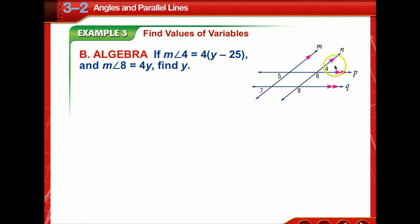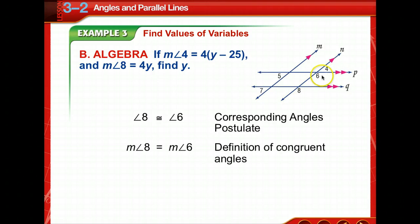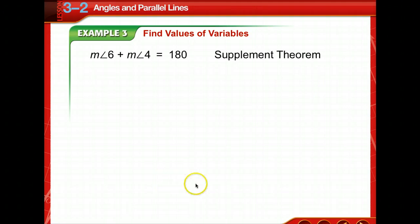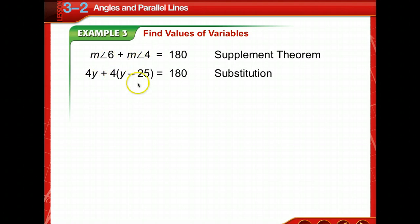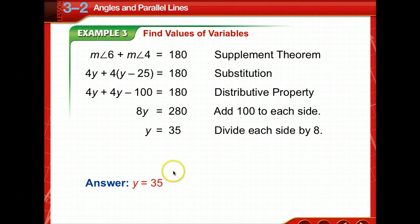For the next problem, the measure of angle 4 is 4y minus 25 and the measure of angle 8 is 4y. Find y. Angle 8 is congruent to angle 6 by the Corresponding Angles Postulate, so their measures are equal. The measure of angle 6 plus the measure of angle 4 equals 180. Since angle 6 equals 4y, we substitute in: 4y + (4y − 25) = 180. Using the distributive property, adding 100 to each side, and dividing by 8, we get y equals 35.